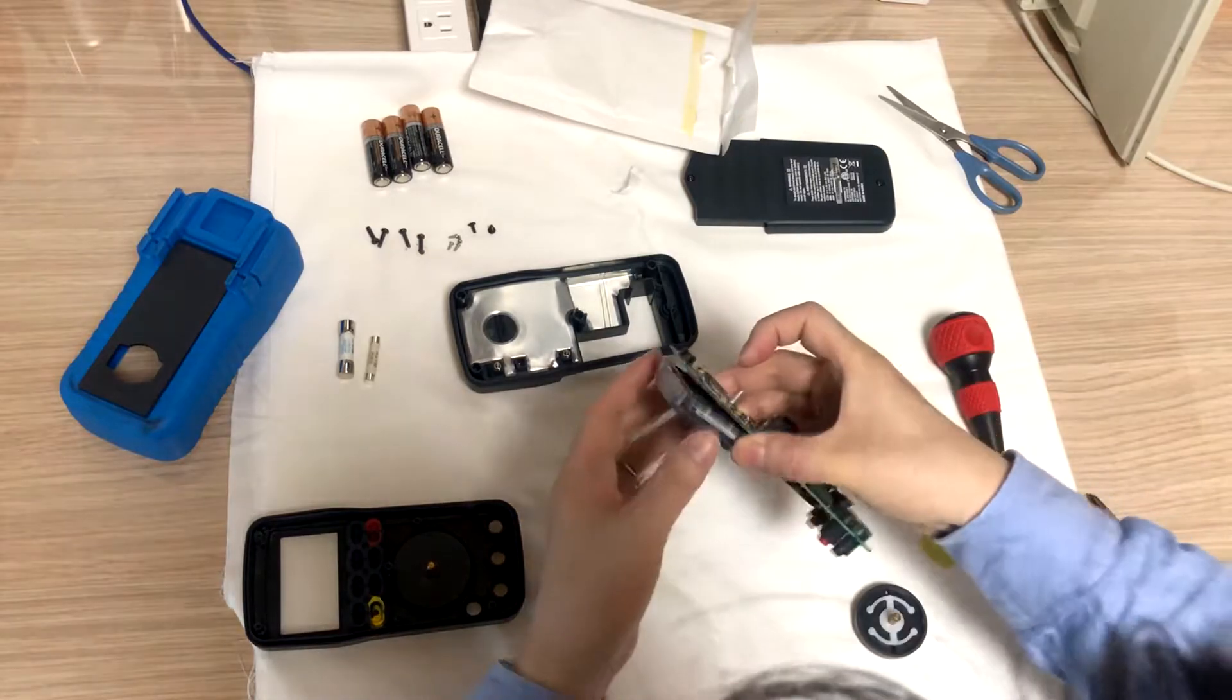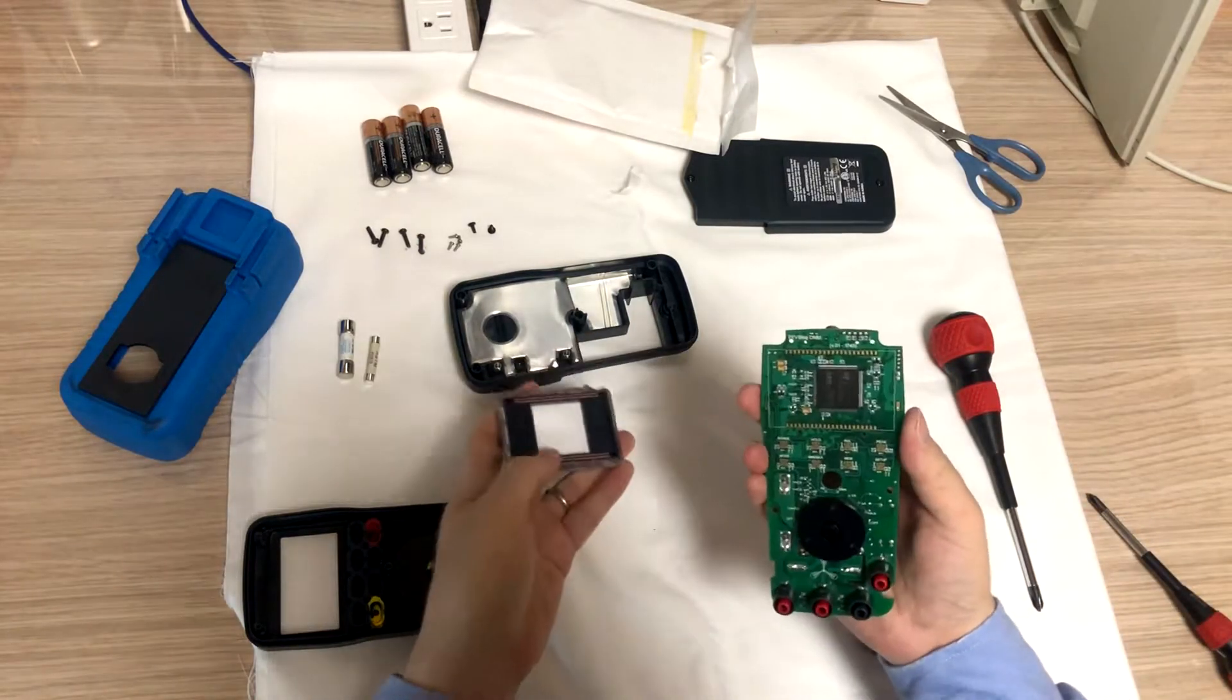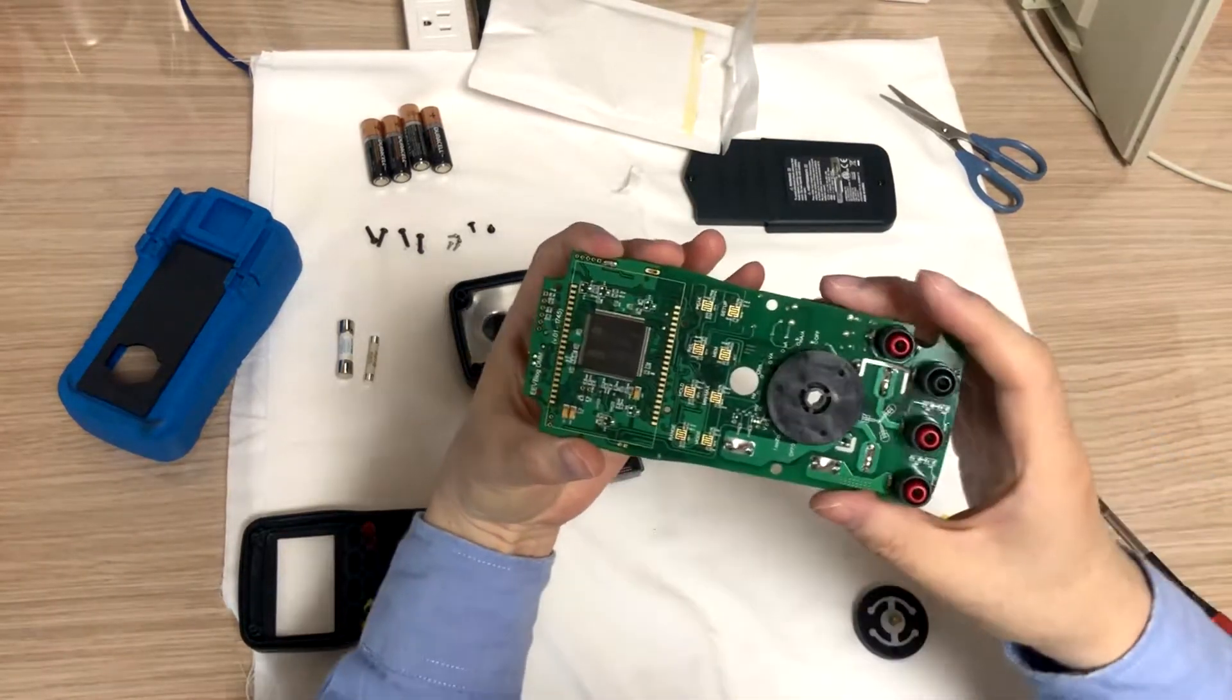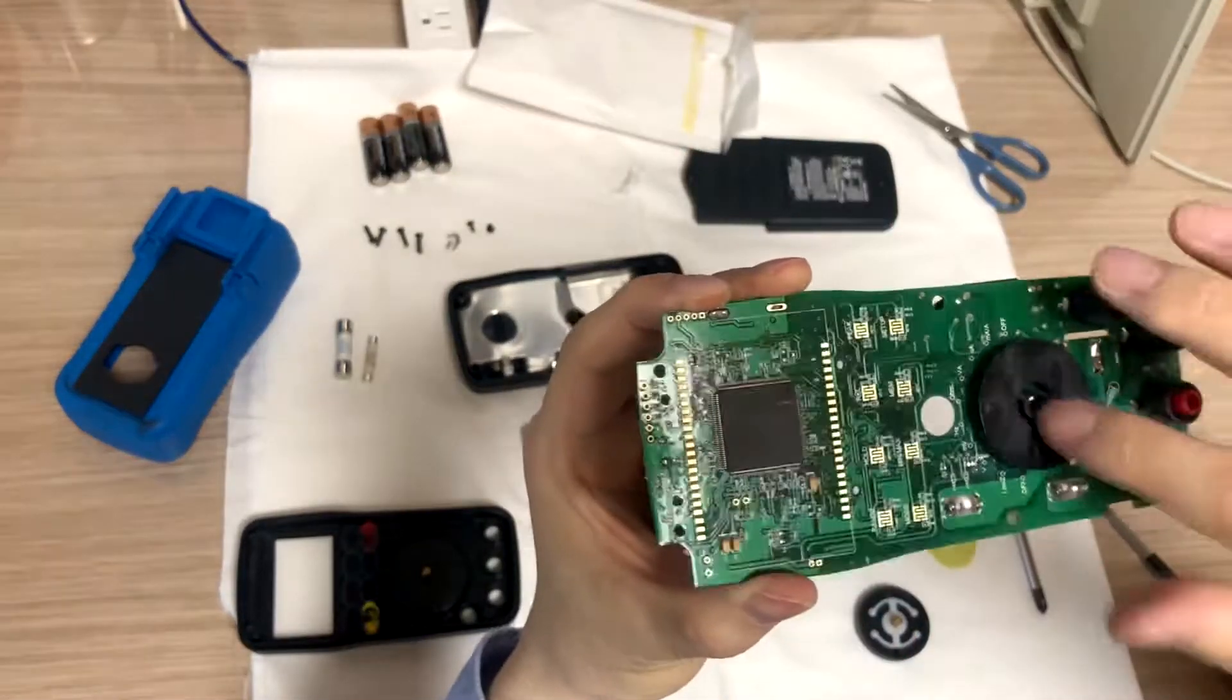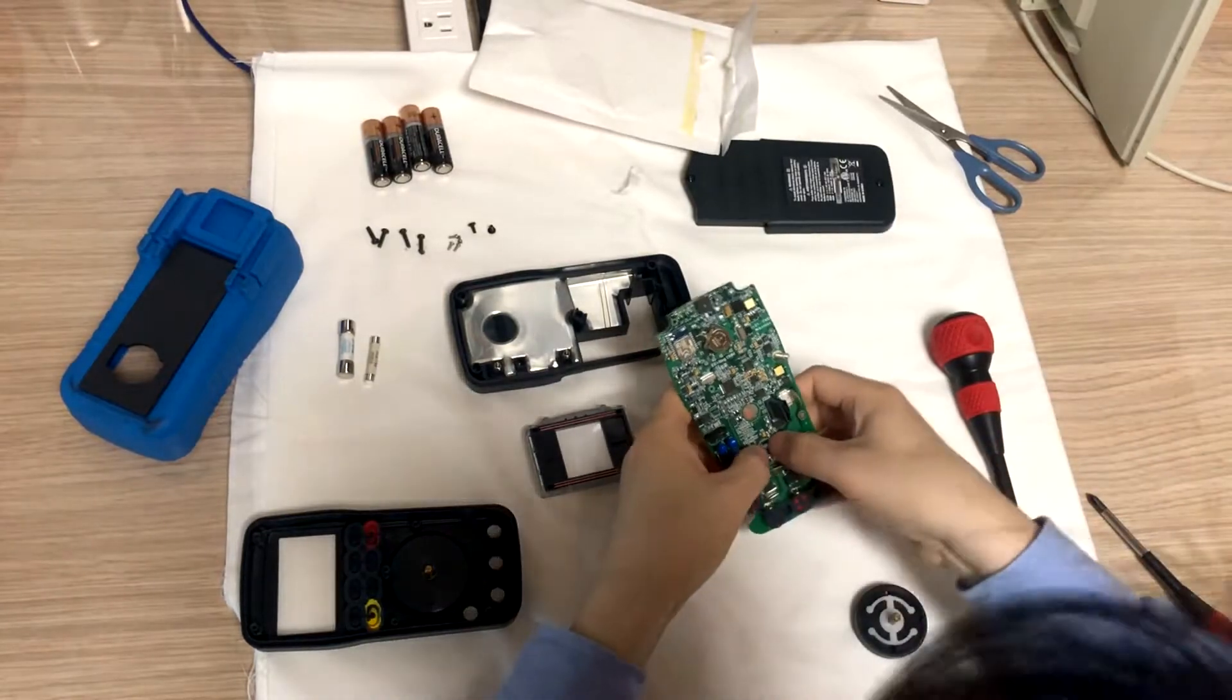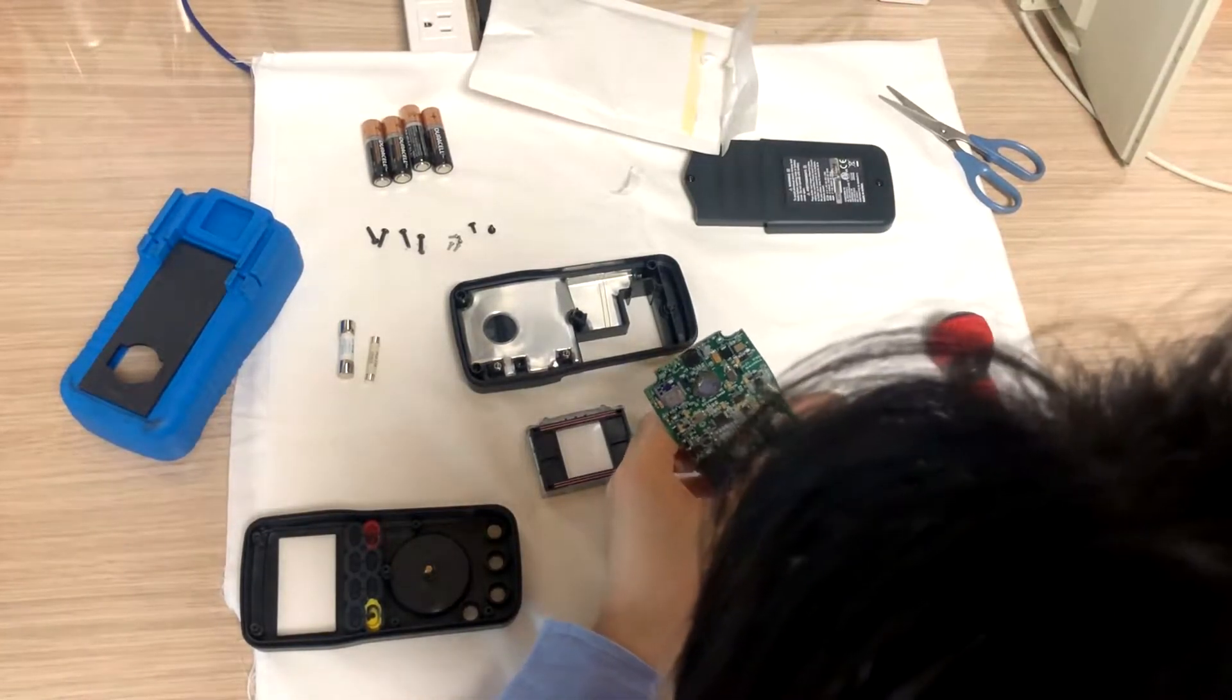And the shield is soldered on the side, so I'm not going to take it off further. Okay, I just desoldered here and came off. So there's a big SD microprocessor here.